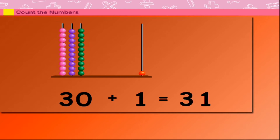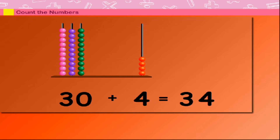30 plus 1 is equal to 31. 30 plus 2 is equal to 32. 30 plus 3 is equal to 33. 30 plus 4 is equal to 34. 30 plus 5 is equal to 35.